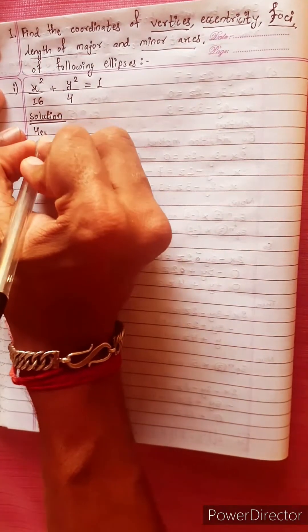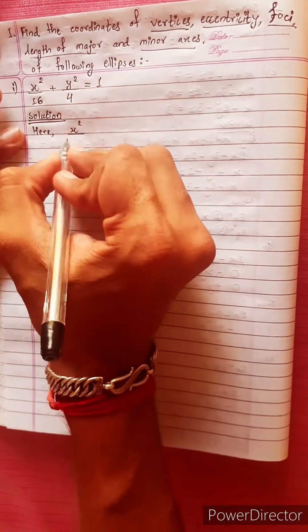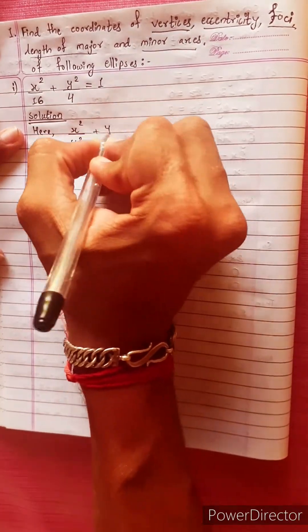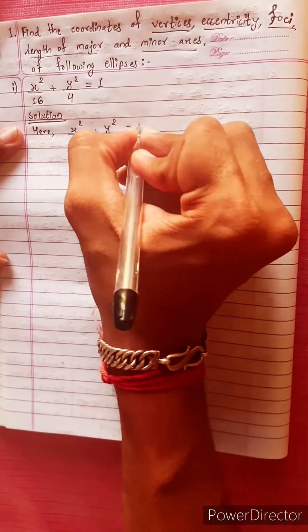Now I will solve this. Here, x squared divided by 16 plus y squared divided by 4 equals to 1.